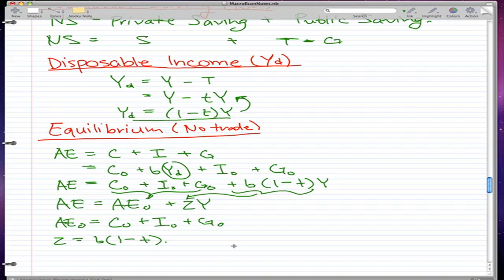One more thing, simple multiplier. I just wanted to remind you that our simple multiplier is 1 over 1 minus Z.